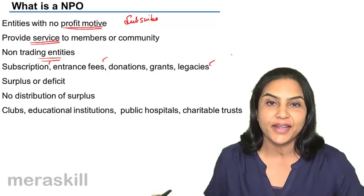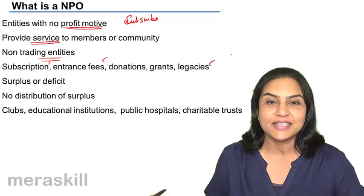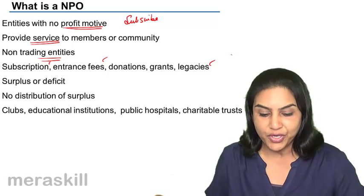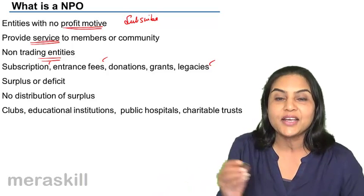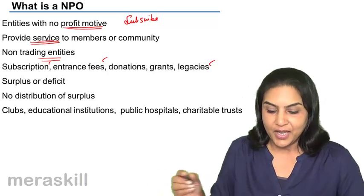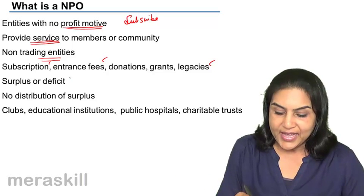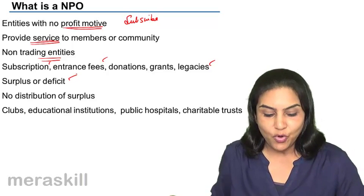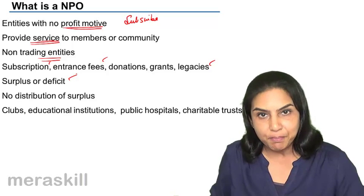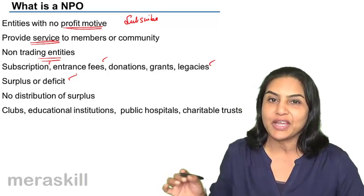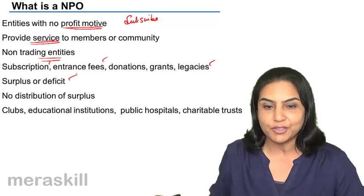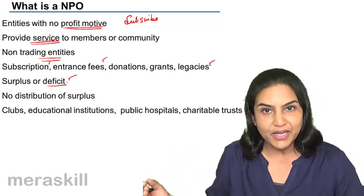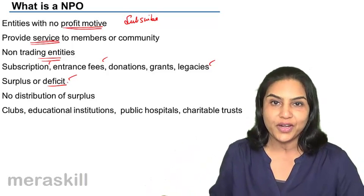Not-for-profit organizations are non-trading entities; they do not buy and sell to make profit. Profit is not their motive — their motive is to provide service. They do not have profit or loss; what they have is either a surplus (excess of income over expenditure) or a deficit (excess of expenditure over income).